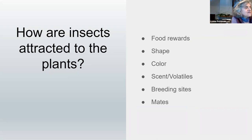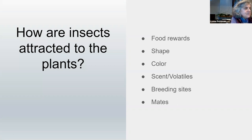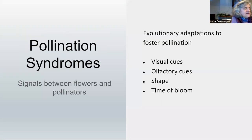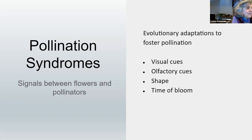Insects are attracted by the prospects of food rewards and lured by characteristics of flowers: the shape, color, and odor of the flower signals the appropriate insects, while the promise of breeding sites and mates lures them in. These signals between flowers and pollinators are morphological adaptations in both insect and plant resulting from coevolution over a great long period of time. The adaptations are called pollination syndromes, and can include visual cues, olfactory or scent cues, and shape.